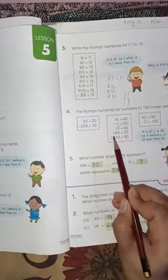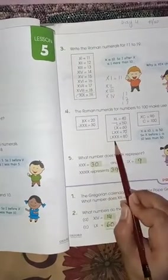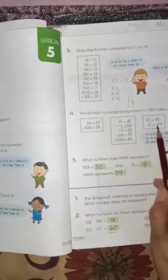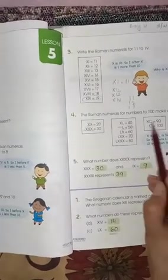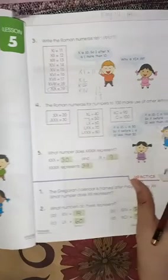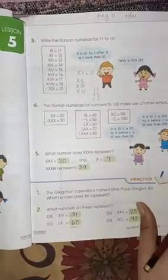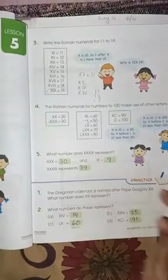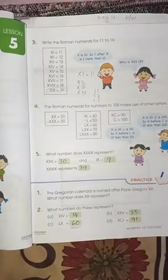LX is 60, LXX is 70, then 80, 90, and 100. Now, you have to learn these and then you are going to solve the exercise.